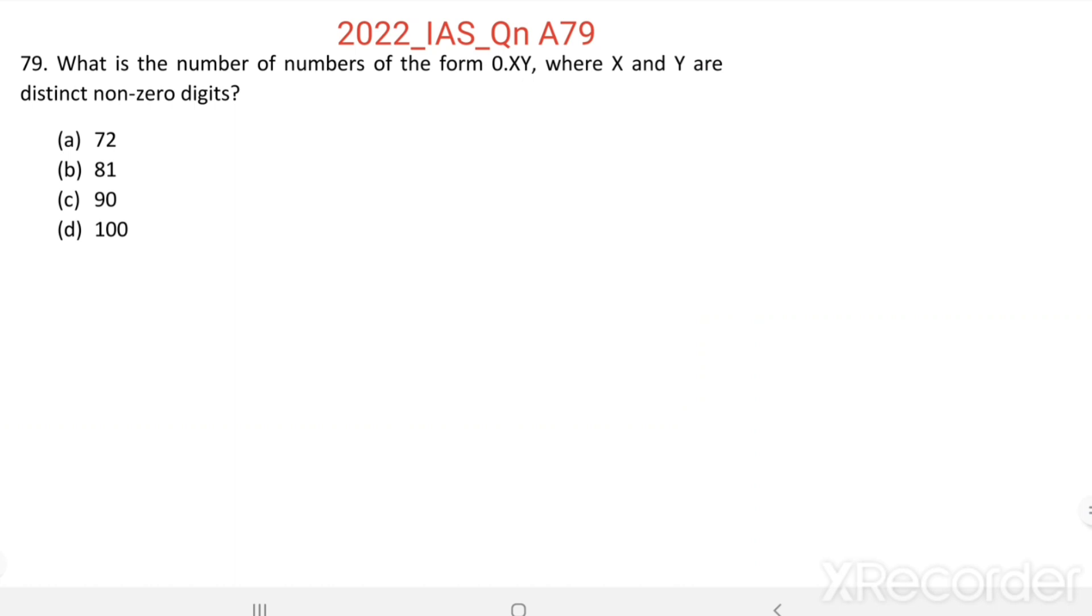We need to find the number of numbers in the form 0.xy, where x and y are non-zero digits. The non-zero digits are 1, 2, 3, 4, 5, 6, 7, 8, and 9.